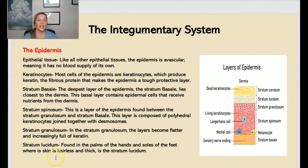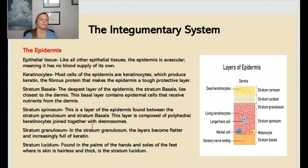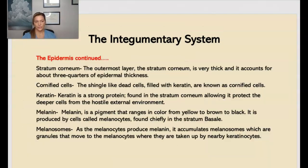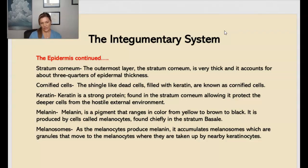Then underneath there you have the stratum granulosum, and this layer becomes flatter and increasingly full of keratin. Last but not least, you have the lucidum, which is found in the palms of our hands and the soles of our feet, where the skin is hairless and thick. Continuing on with the epidermis, you have the stratum corneum, the outermost layer — very thick and it accounts for about three quarters of the epidermal thickness. There are cornified cells, which are shingle-like dead cells filled with keratin. Keratin is a strong protein found in the stratum corneum, allowing it to protect the deeper cells from the hostile external environment.